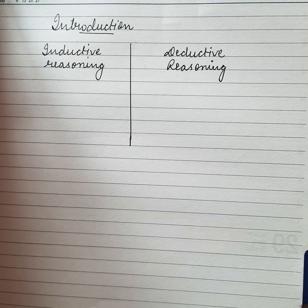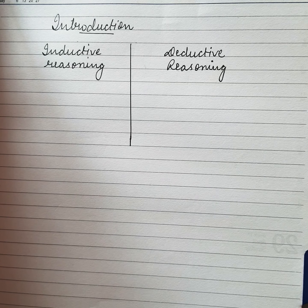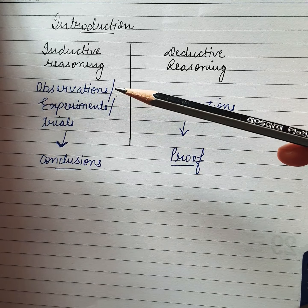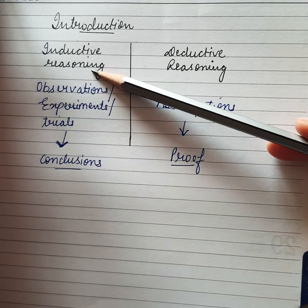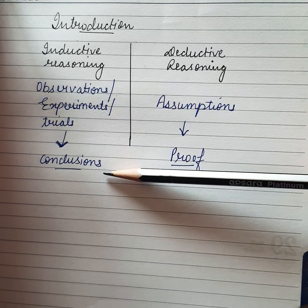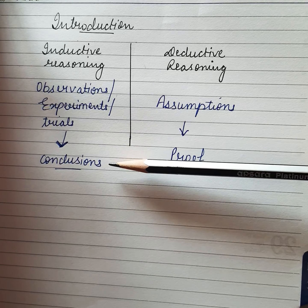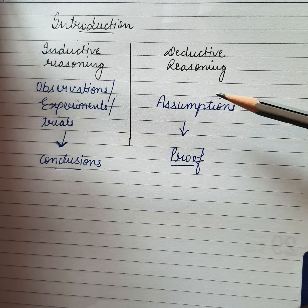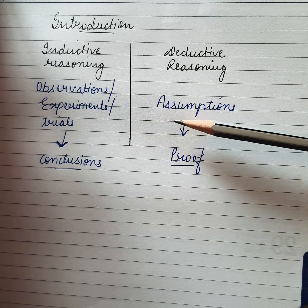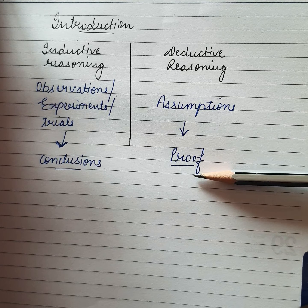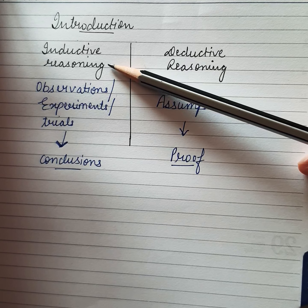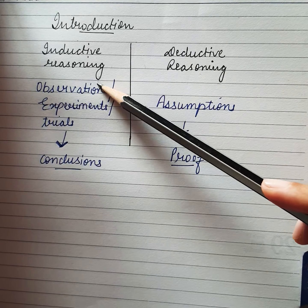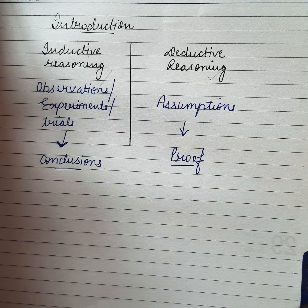First, we will understand what inductive reasoning and deductive reasoning are, so that we can clearly understand the meaning of induction. When a person makes observations, experiments and trials, and on their basis reaches a conclusion, this is known as inductive reasoning. On the other hand, when a person proceeds from certain assumptions to complete proofs rather than from experience, that is deductive reasoning.